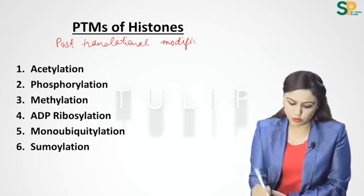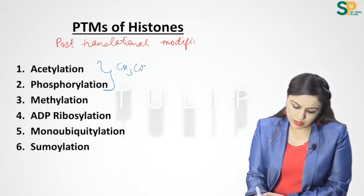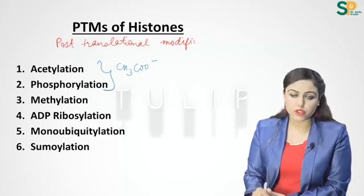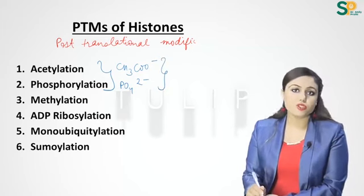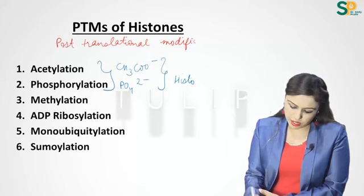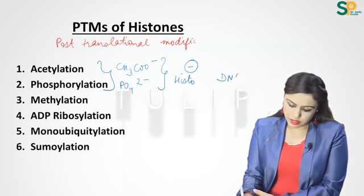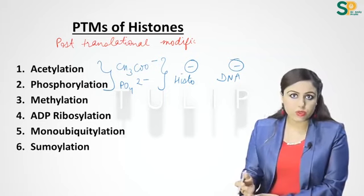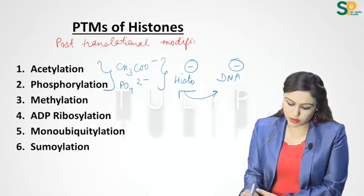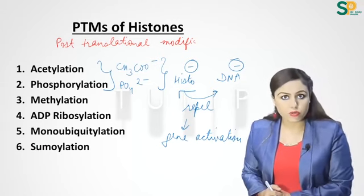How PTMs of histones lead to gene activation — example with acetylation and phosphorylation: acetylation adds an acetyl group (negative charge) and phosphorylation adds a phosphate group (also negative charge) to histones. Normally histones are positively charged, but now histones and DNA are same-charged, so they repel each other.